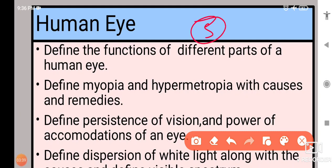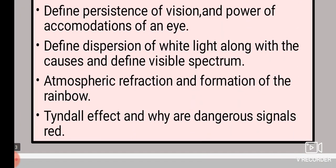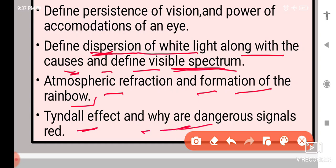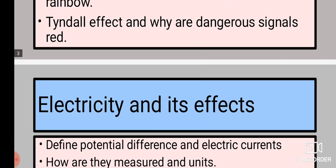Topics I have given you, human eye is also five marks. Define the functions of different parts of a human eye. Define myopia and hypermetropia with causes and remedies. Define persistence of vision and power of accommodations of an eye. Define dispersion of white light along with the causes of dispersion. And define visible spectrum, atmospheric refraction and formation of the rainbow. Then Tyndall effect and why are dangerous signals red. So that was all from human eye.